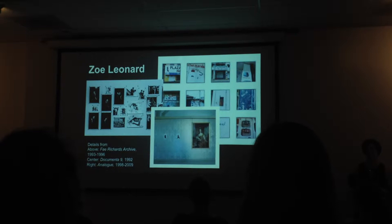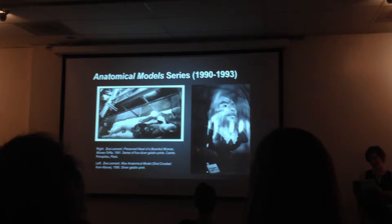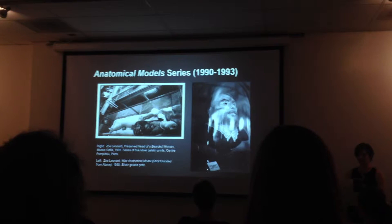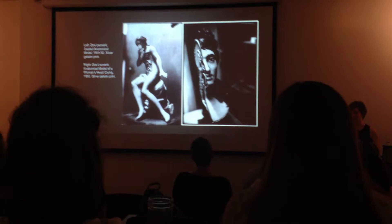In her series Anatomical Models, Leonard turns her lens to wax or preserved anatomical models of women from the 18th century. Found in museums and public exhibitions across Europe, these wax models were created to supplement medical students' study of anatomy, evolving into a stylized art form in public exhibitions meant to educate as well as entertain the masses. Leonard's photographs of these models are not clear and rational; they shy away from their traditions of medical objectivity and instead edge into a gothic sensibility.